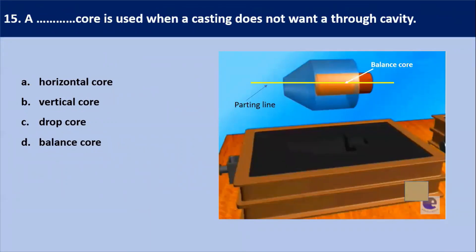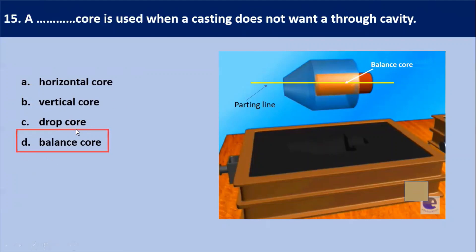Next question: which core is used when a casting does not want a through cavity? As shown in this diagram, no through cavity is generated. In such cases the balance core is used to create a hollow cavity in the casting, left free-standing in the cavity of the mold. It is placed within the parting line but does not extend all the way to the other side of the sand mold. A balance core is used to produce a blind hole.